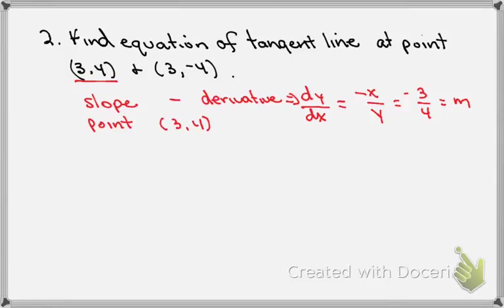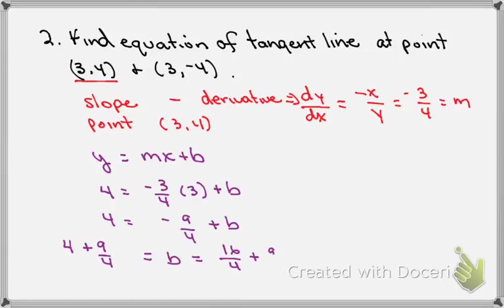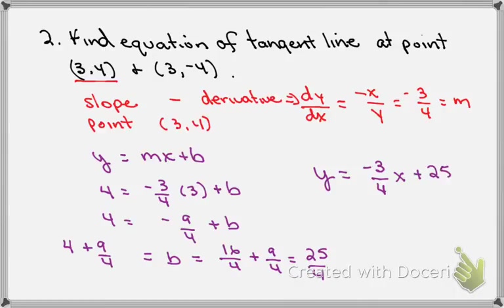Now we just need to remember from basic algebra that y equals mx plus b. If I know the slope and I know a point, I can substitute and solve for b. So I know when y is equal to 4, my slope is minus 3/4, and x equals 3 plus b. So 4 equals minus 9/4 plus b, or b equals 4 plus 9/4. Since 4 equals 16/4, that's 16/4 plus 9/4, or 25/4.